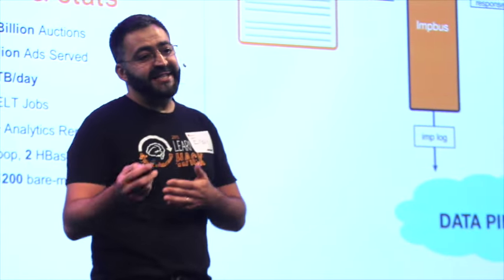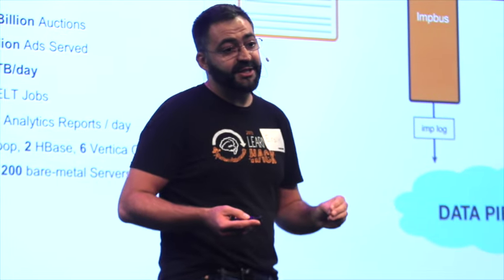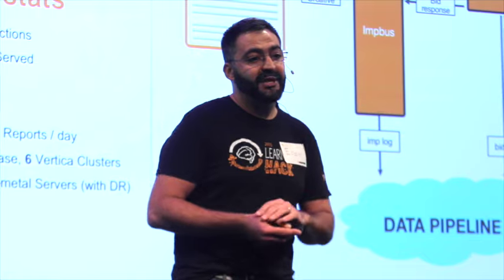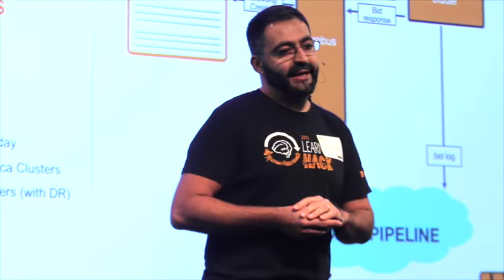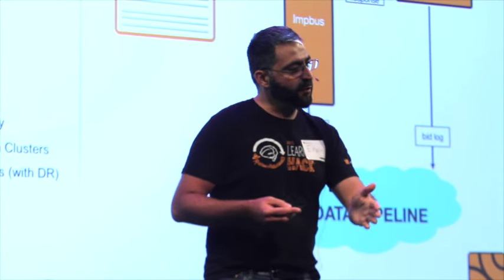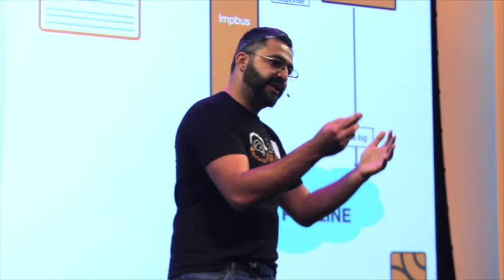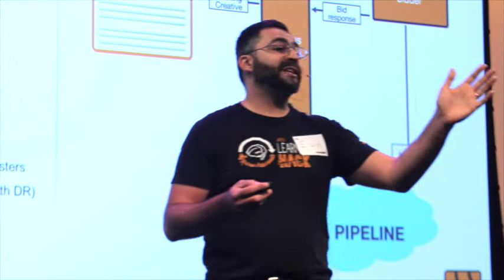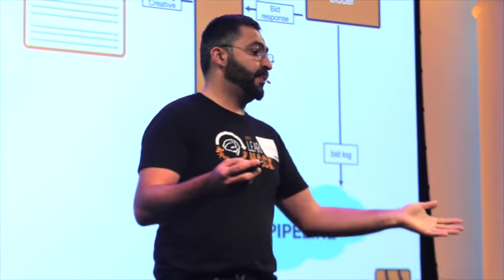Not every single auction transacts — there isn't a buyer for every one. At peak, we see about 44 billion transactions, meaning someone was willing to pay for that impression. As a result of all these auctions, we're seeing at peak 170-plus terabytes of data in our platform. We have over 400 ETL jobs — extract, load, and transform jobs — running every hour. These jobs can join multiple logs and create new outputs, sync data between sources, or run purge jobs on rolling window tables.